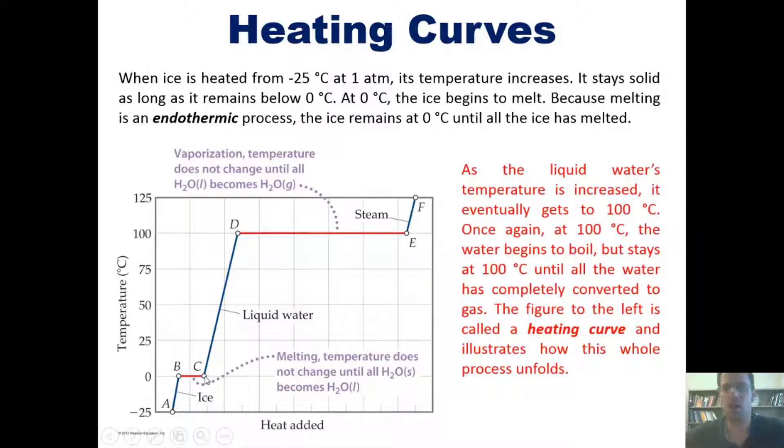Now, as the liquid water's temperature increases, it eventually gets to 100 degrees Celsius. In between this entire time, it's liquid. At 100 degrees Celsius, much like we saw at zero degrees Celsius, we start to see a phase change. The liquid water begins to boil.